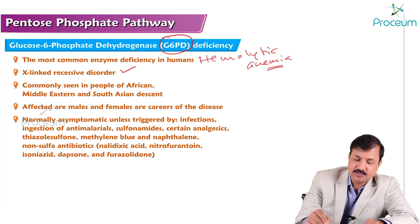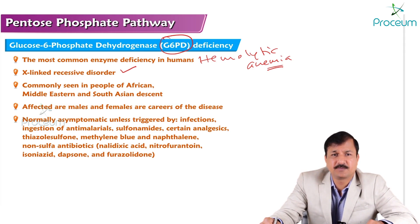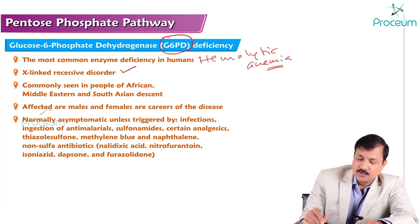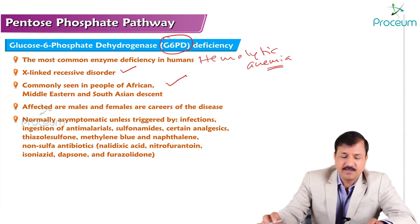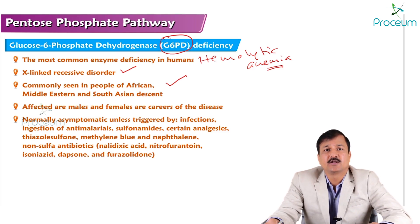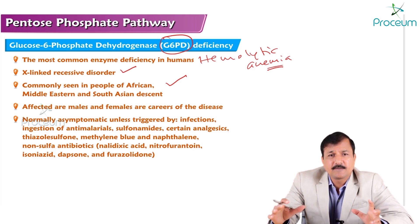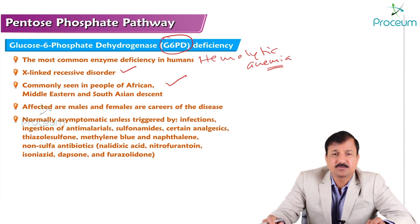It is an X-linked recessive disorder. That means males are the ones that are symptomatic and females act as carriers. G6PD deficiency is commonly seen in people who are descendants of Africa, Middle Eastern, and South Asian descent — this disorder is more frequent in these particular geographical areas.